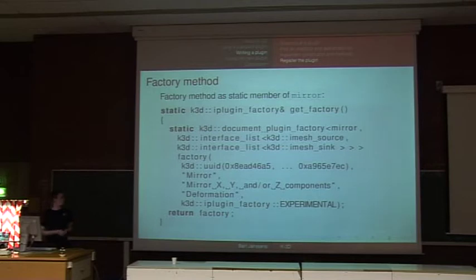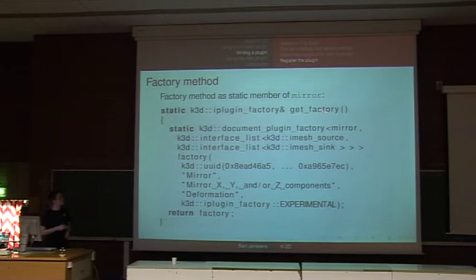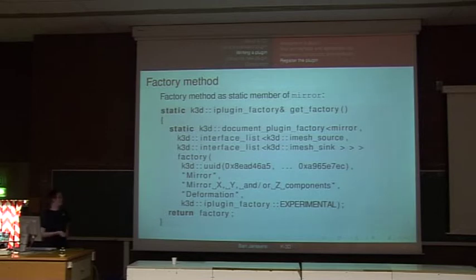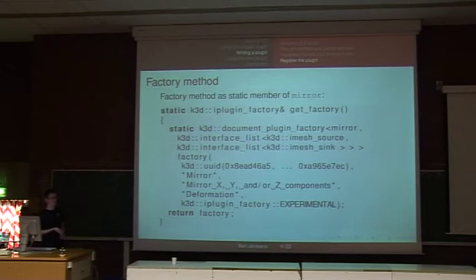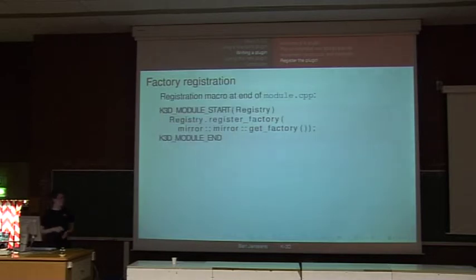The last thing we do is plugin registration. We define a factory, which contains an interface list used to track what capabilities each plugin has. In this case it is both a mesh source and a mesh sink, because it can take mesh data as input and output new mesh data. We also give it a unique ID — there's a small tool based on libuuid that generates a 64-bit unique ID for each plugin, used to recover plugins from documents. We give it a name, a description for the tooltip, a category, and mark it as experimental if we're not entirely sure it works completely. Finally, we call the registration macro, which sets an entry point to the module. Since it will be compiled as a shared object, we provide an entry point for DLOpen to load the module into K3D.